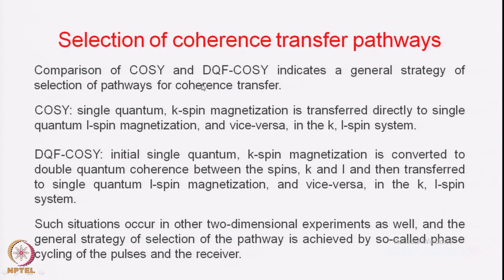We discussed three experiments: the COSY, double quantum filtered COSY, and also the NOESY. In the COSY, we had magnetization transfer where you started with the single quantum coherence of a particular spin, the K spin, and the K spin magnetization is transferred directly to single quantum L spin magnetization, and similarly the L spin magnetization is also transferred to the K spin.